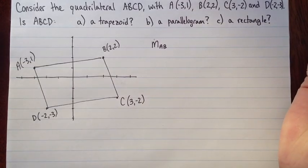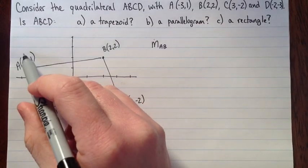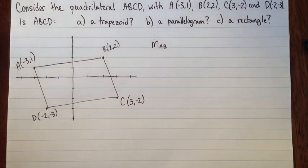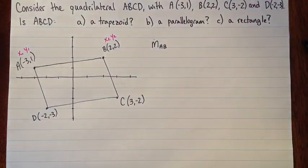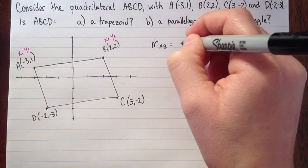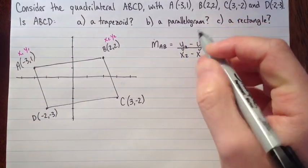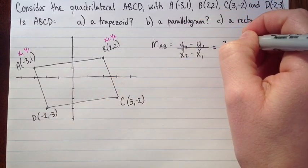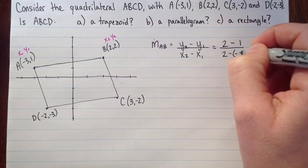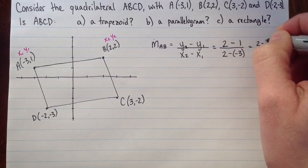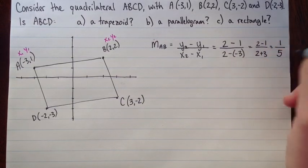I'll do AB first, the slope from A to B. I'll label which one is the first point and the second point. Point A will be x1, y1, and B will be x2, y2. The slope formula is change in y, so y2 minus y1 over x2 minus x1. That's 2 minus 1 over 2 minus negative 3, which is 2 minus 1 over 2 plus 3, which equals 1 over 5.